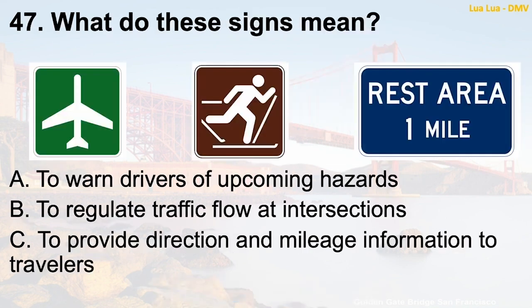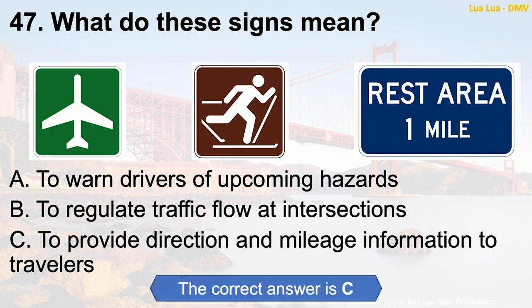Question 47: What do these signs mean? A. To warn drivers of upcoming hazards. B. To regulate traffic flow at intersections. C. To provide direction and mileage information to travelers. The correct answer is C: To provide direction and mileage information to travelers.